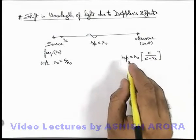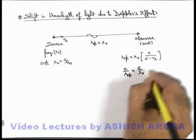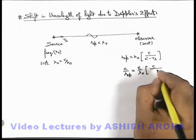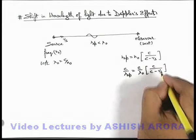In this situation this n apparent can be written as c by lambda apparent which is equal to c by lambda knot multiplied by c upon c minus v s.